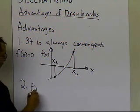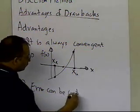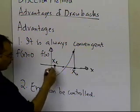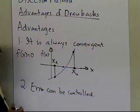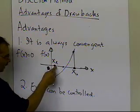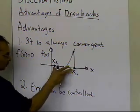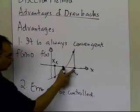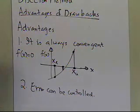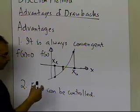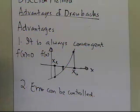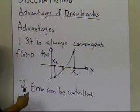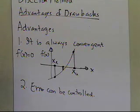The second advantage is that the error can be controlled. If the root is between two points, then we know the maximum error in the root would be that bracket width. Once you have halved the bracket, the root is between a new pair of points, and the maximum true error is halved as well. So as you keep on applying one iteration after another, the maximum error keeps on getting halved, meaning you can know in the beginning itself how much error you're going to have as you go from one iteration to another.